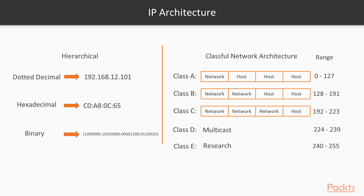Each bit in our binary number is dedicated to either a network or a host. For example, in a class A network, the first octet is devoted to the network, giving us a range of 0 through 127 for network addressing, while the remaining bits can be used for device addressing — giving us a large number of hosts but a small number of networks. In contrast, a class C network has three octets available for a large number of networks, but a small number of hosts. In practice, for a large number of hosts you'd choose class A or B for scalability, while class C makes the network easier to read and maintain.